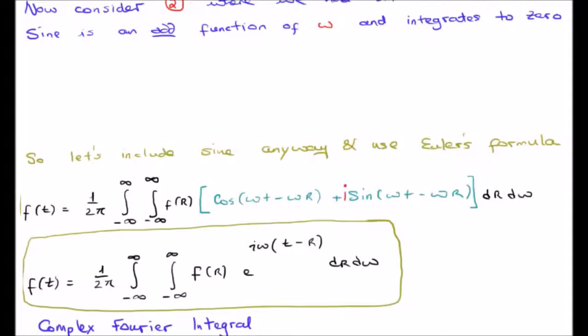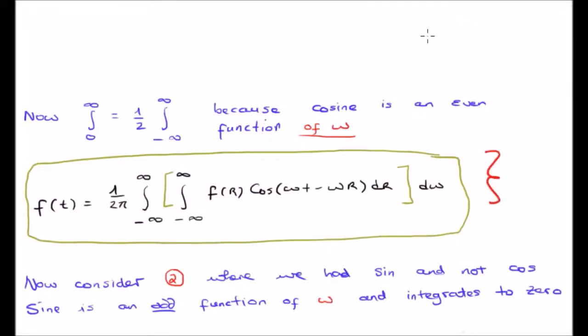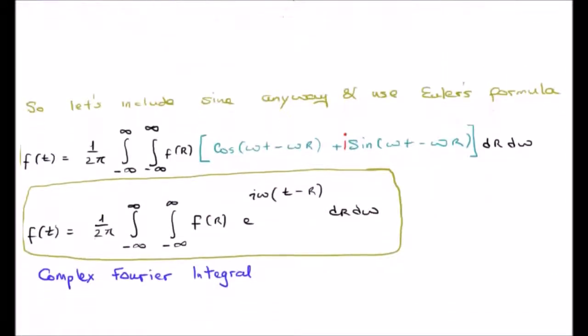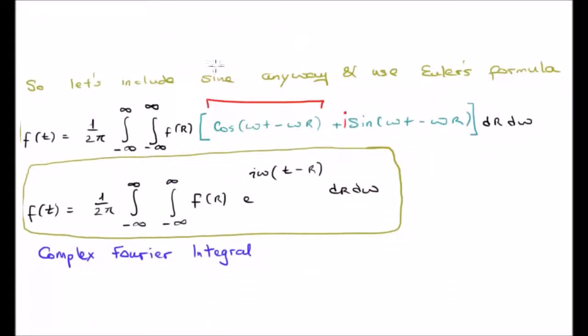So the sleight of hand we are going to do is include a sine term anyway in this expression and invoke Euler's formula. We take the cosine we started with and add i times the sine of the corresponding argument. Thereafter we convert this to a complex exponential — and hopefully now you can see why it's important to use the dummy variable. Finally, what we're left with is the following expression.